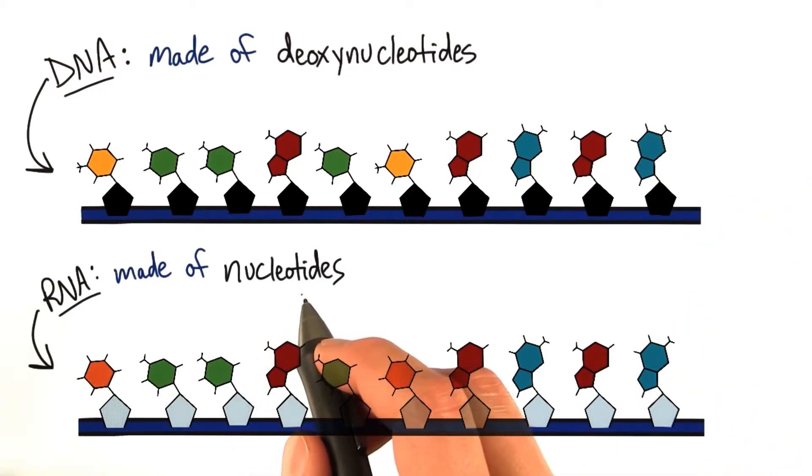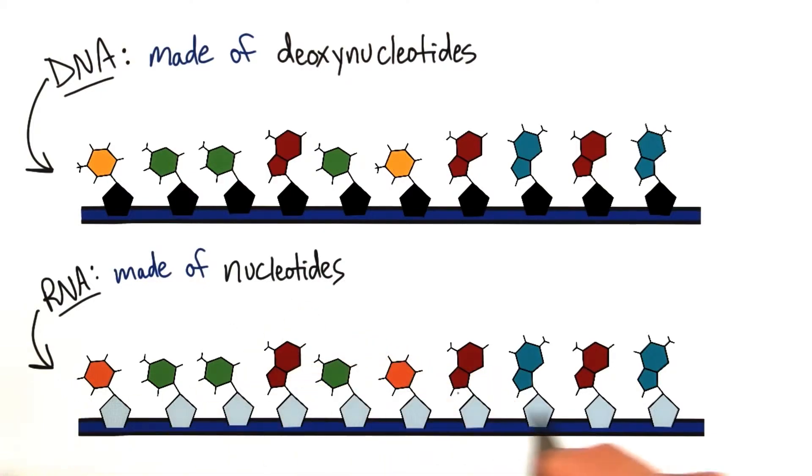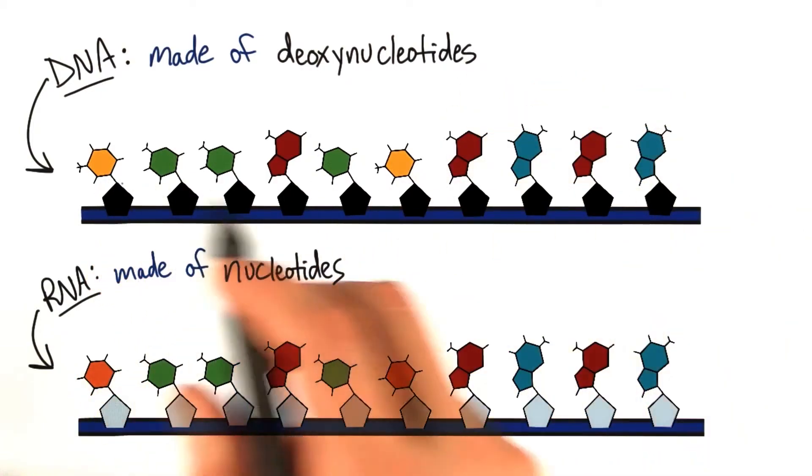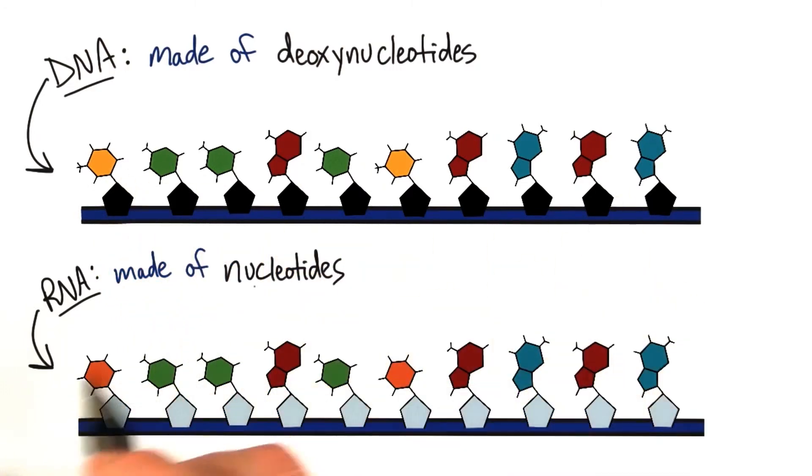Now, nucleotides have nitrogenous bases just like deoxynucleotides do. You can see the colorful structures in the DNA and in the RNA.